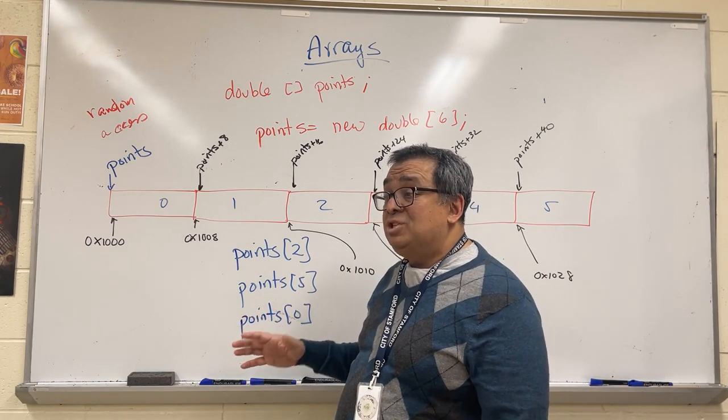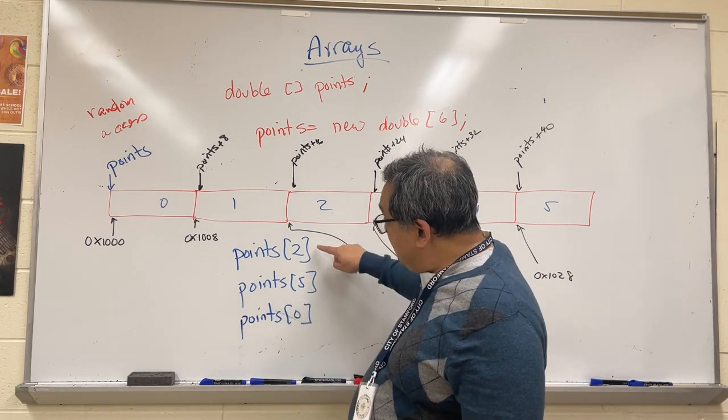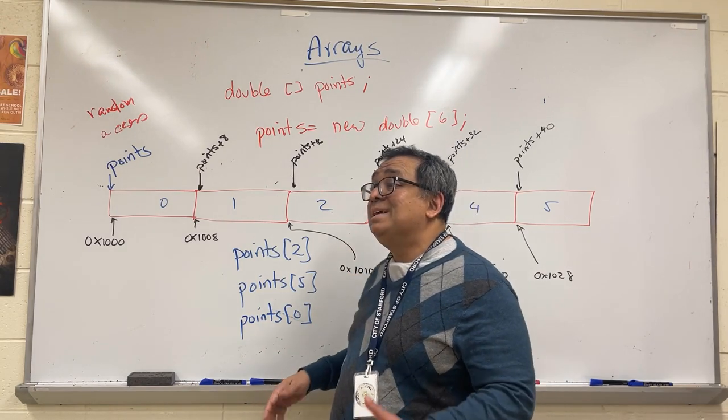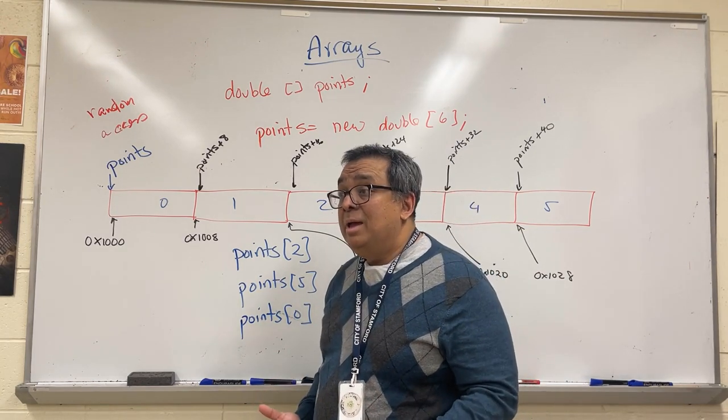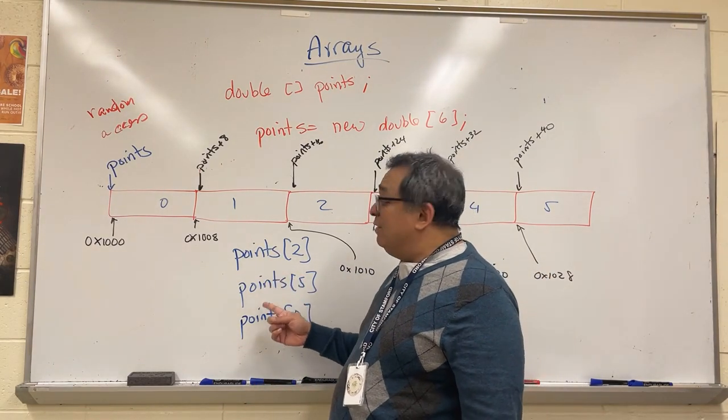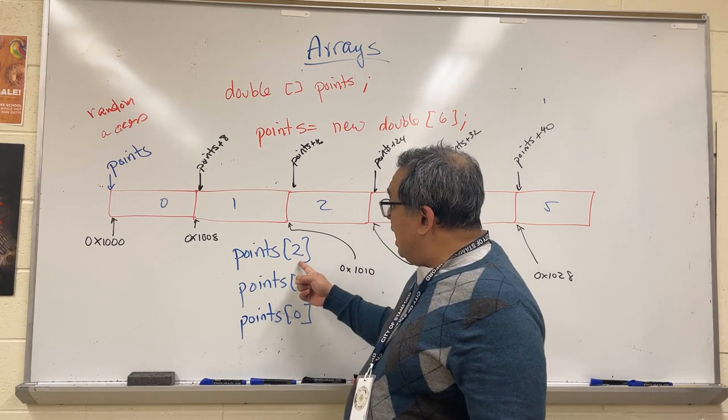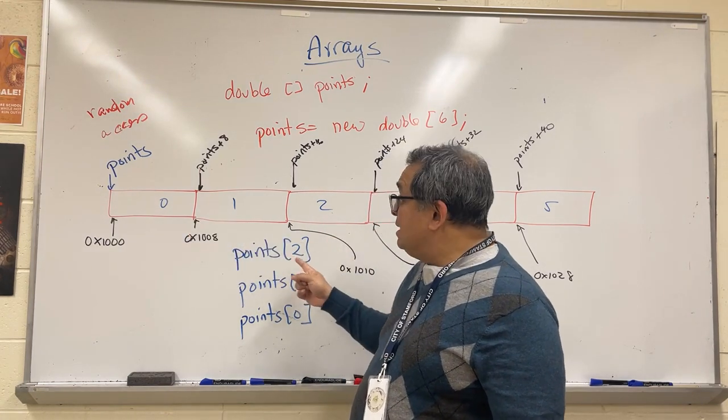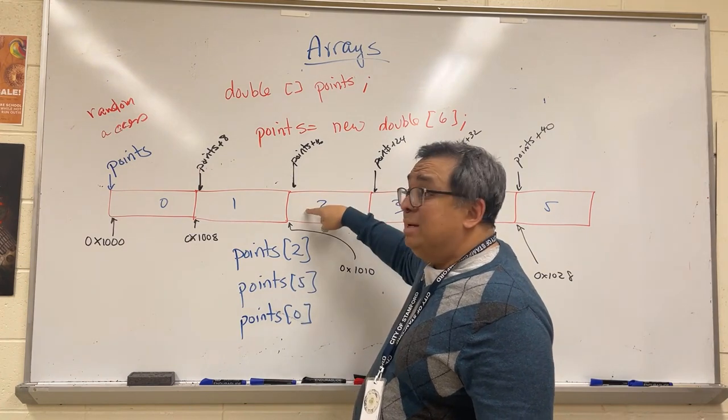The amount of time it takes for the Java virtual machine to access this variable versus this variable versus this variable is exactly the same, and I want to explain to you why that is. If I asked the Java virtual machine to give me item two, which is the third item in the array, here's how it calculates where item two is stored.